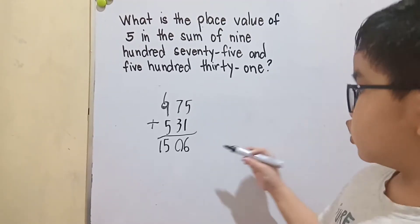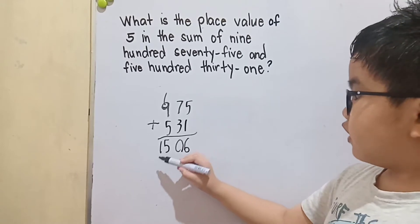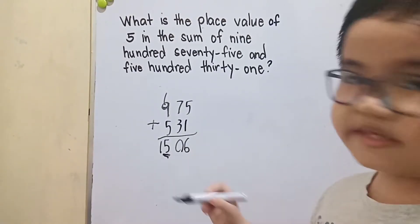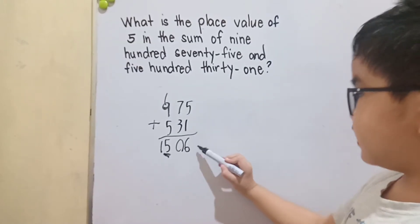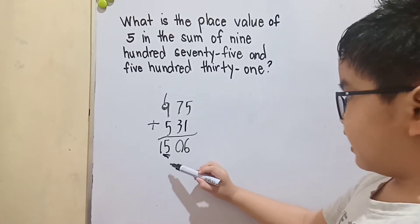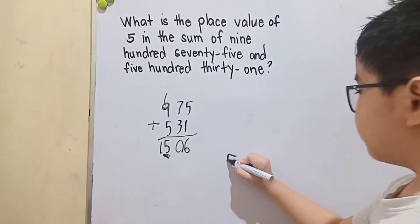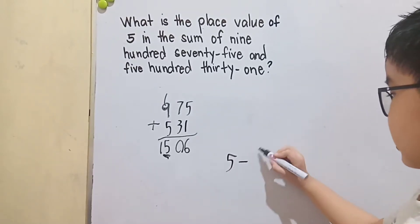5 is in here. Let's see: this is ones, this is tens, and this is hundreds. So 5 is in the hundreds place.